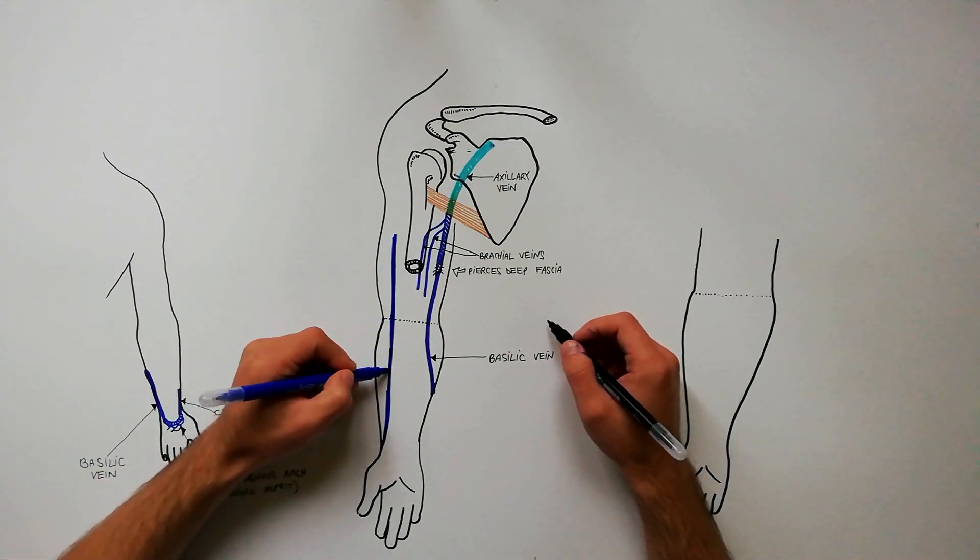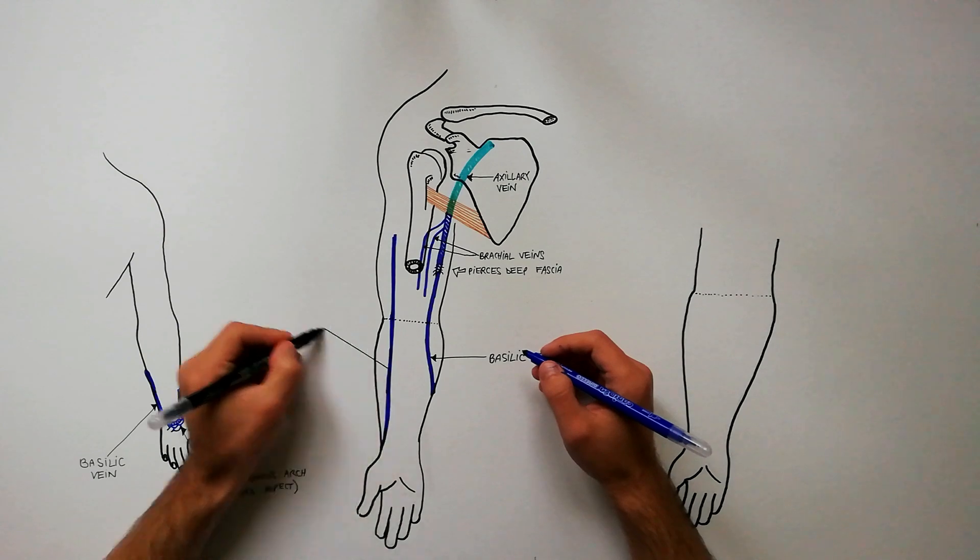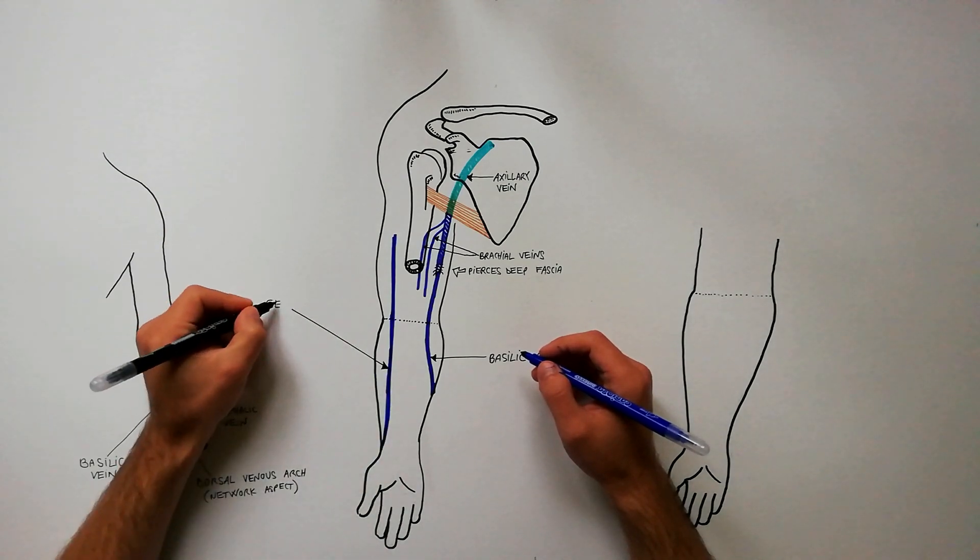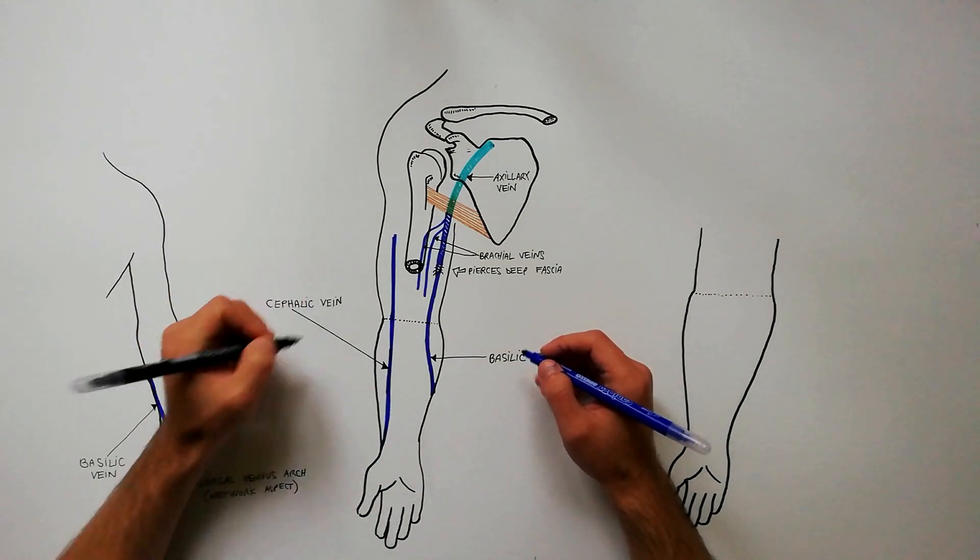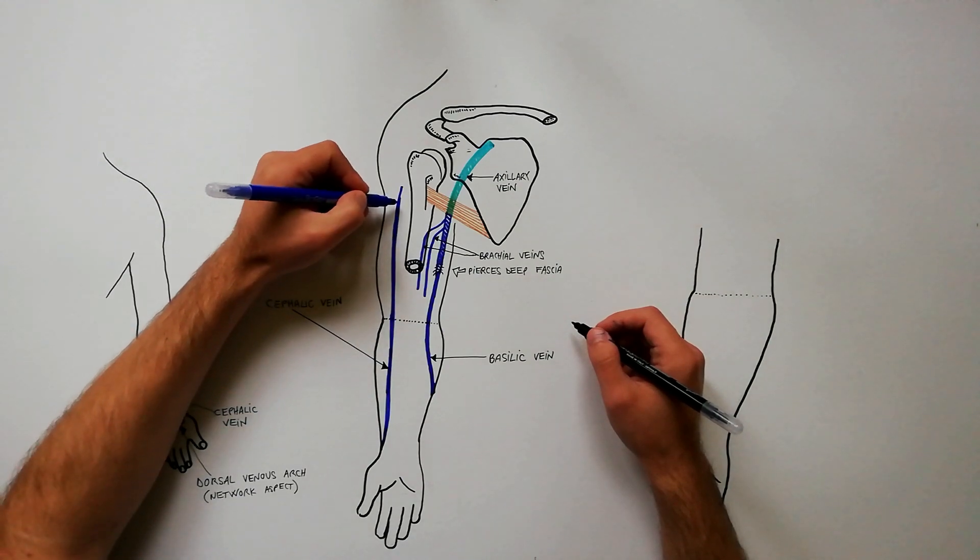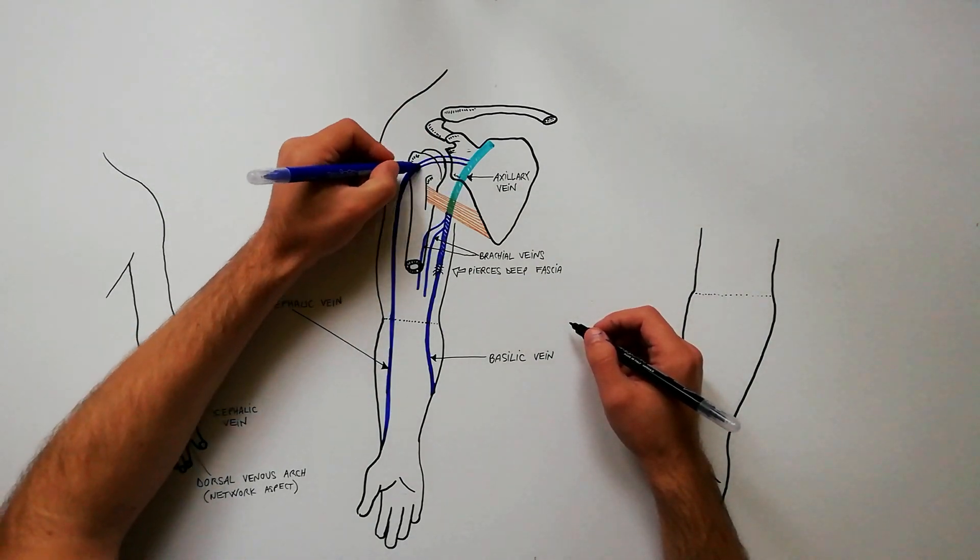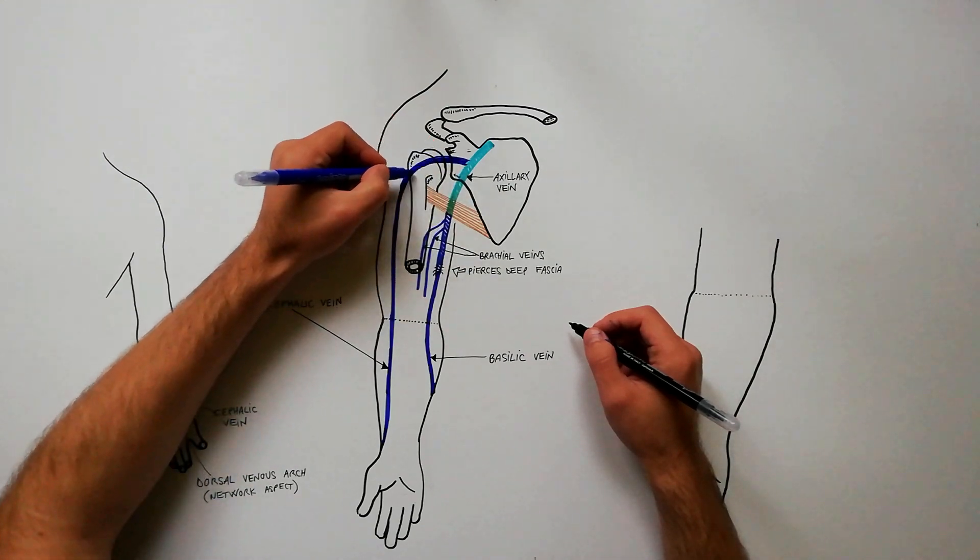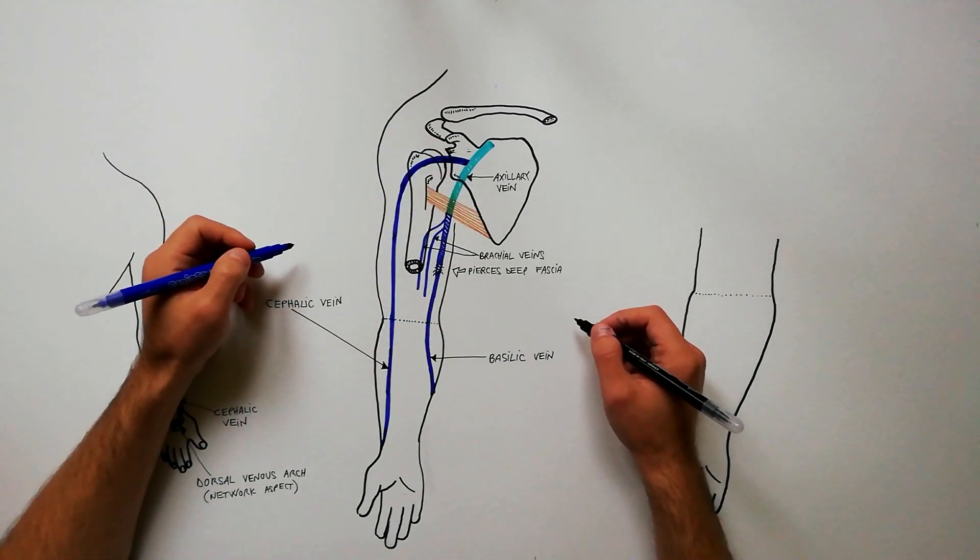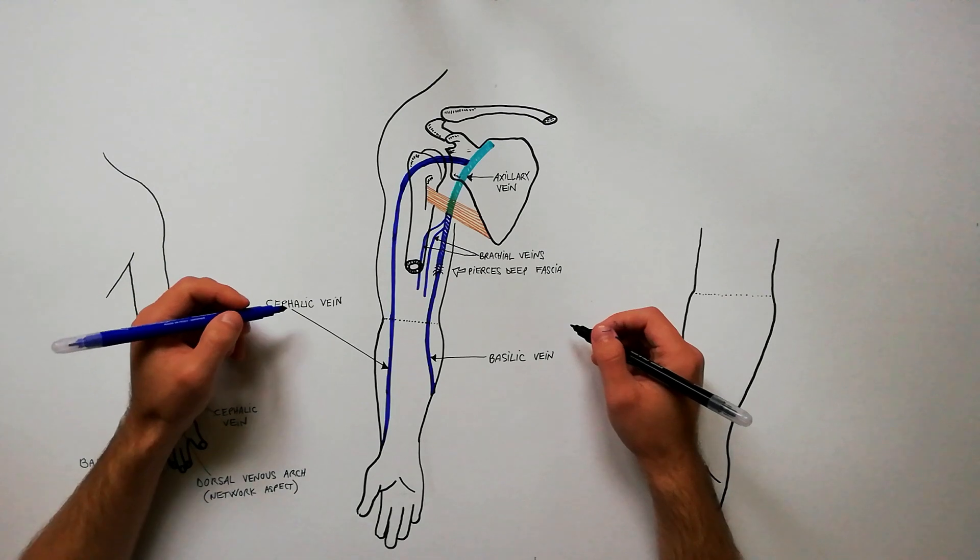It then passes upwards over the anterior elbow region and ascends laterally to the biceps muscle to reach the deltopectoral groove. The vein then perforates the clavipectoral fascia to drain into the axillary vein.